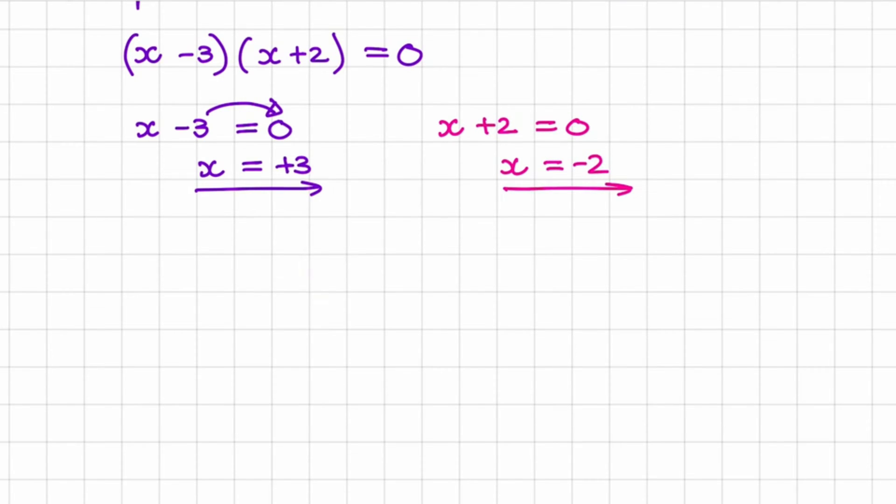So let me show you why this is true. So if I replace x with negative 2 in our first bracket and x with negative 2 in our second bracket, we'll have negative 5 multiplied with 0 is equal to 0. And now the left hand side is equal to the right hand side.